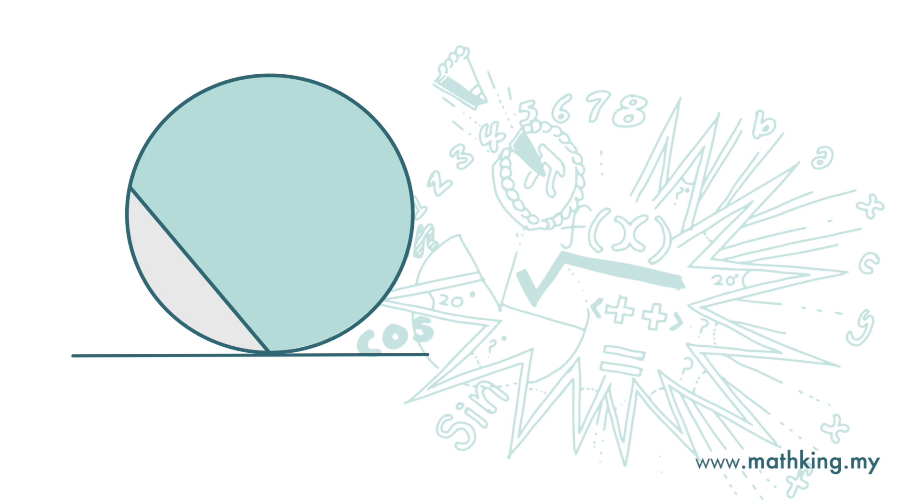At the same time, we also have an angle between the chord and the tangent. This angle is equal to the angle in the major segment, which we call the alternate segment.